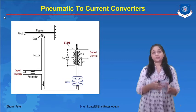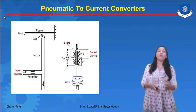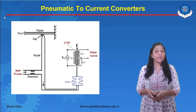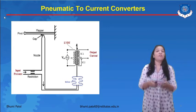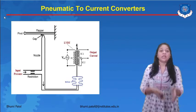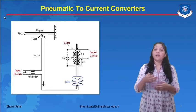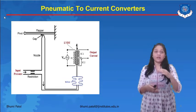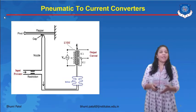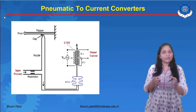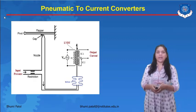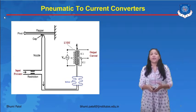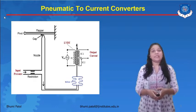This is the diagram of the pneumatic to current converter — how we can convert the pressure signal into the current signal. In the pneumatic system, we generally use a flapper-nozzle system. The input is given to the flapper-nozzle system. Whenever pressure is applied, it generates a back pressure, which is known as TB.